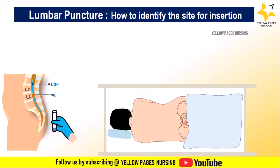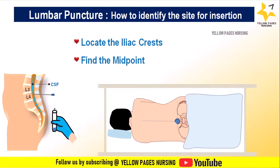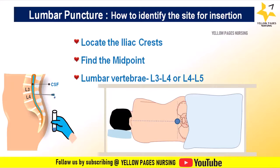To identify the insertion site, locate the iliac crests — the highest points of the hip bones on both sides of the lower back. Draw an imaginary line between the tops of the iliac crests; the midpoint represents the approximate midline of the lower back. The lumbar puncture needle is inserted along this midline between vertebrae L3-L4 or L4-L5.